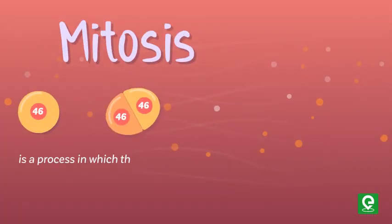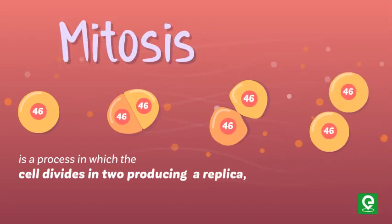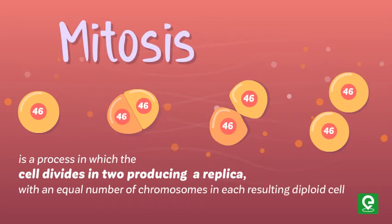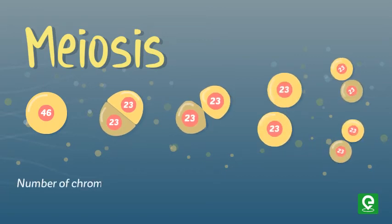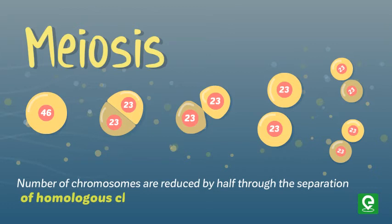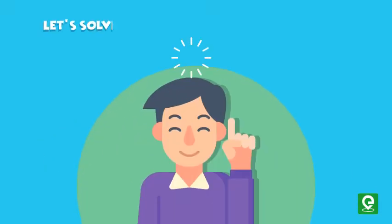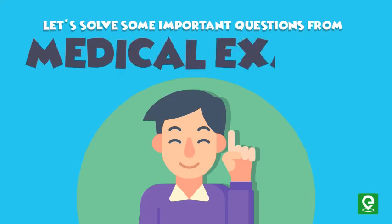Mitosis is a process in which the cell divides producing a replica with an equal number of chromosomes in each resulting diploid cell. Whereas in meiosis, the number of chromosomes are reduced by half through the separation of homologous chromosomes, producing two haploid cells. Let's solve some important questions from medical exams.